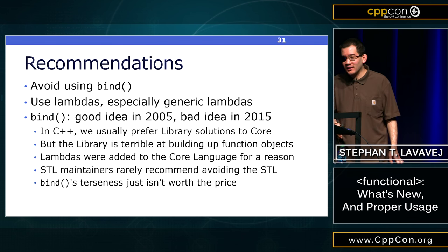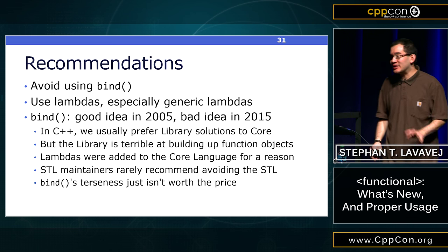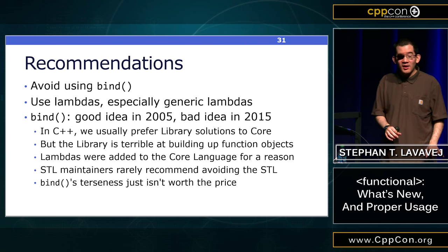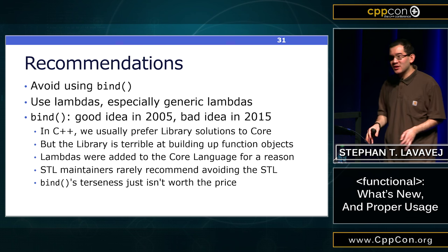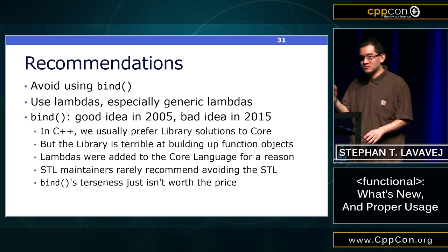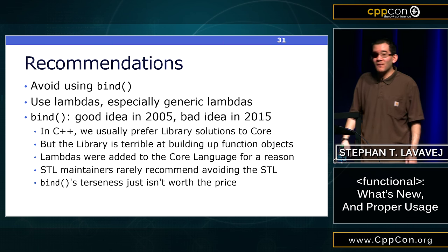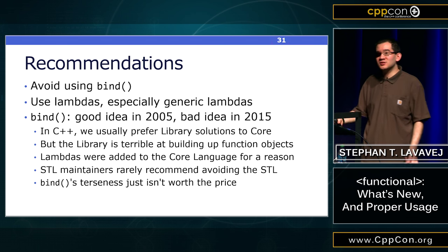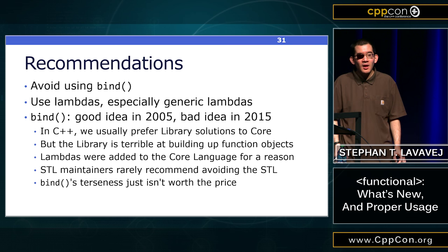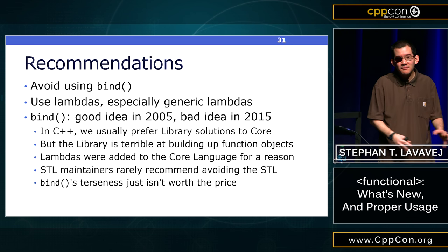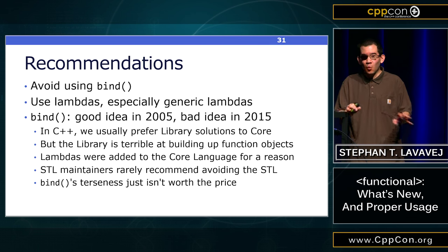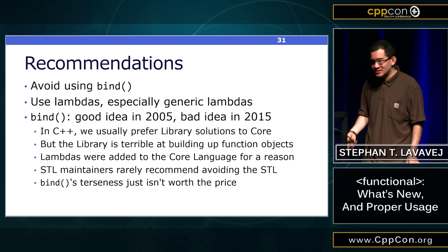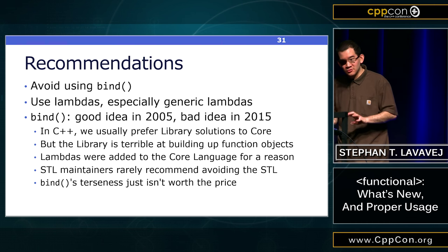My recommendation is stronger than for mem_fn: avoid using bind. It's just not worth it. Use lambdas. It may be tempting because bind is sometimes shorter, but the verbosity of the lambda is worth the price. Usually in the STL we like library solutions because they provide a more abstract solution than the core language, but bind is essentially a counter-example. We tried to make building up function objects in the standard library all the way back in Boost and TR1, and it just doesn't work well. That's why lambdas were proposed and added to the core language.